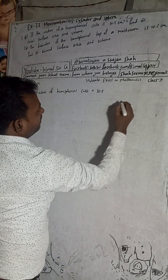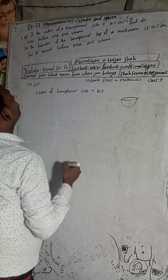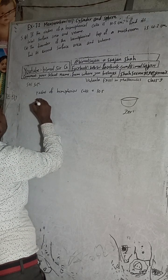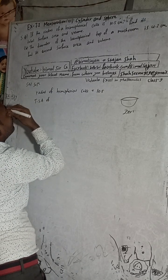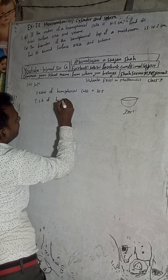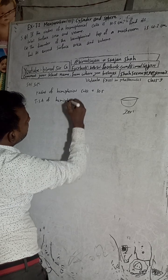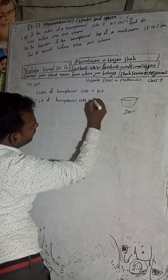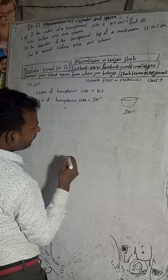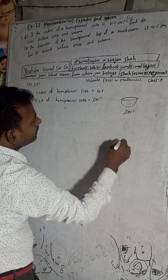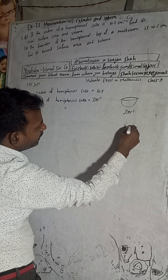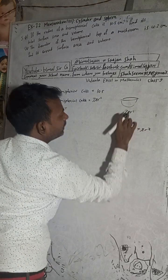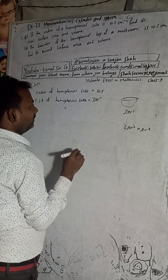This is a hemisphere. The total surface area of the hemisphere is 3πr². The curved surface area of the hemisphere is 2πr², and we add the circular base which is πr², so together we get 3πr² as the total surface area of the hemisphere.